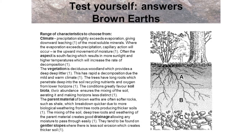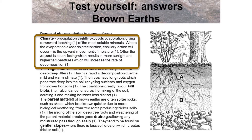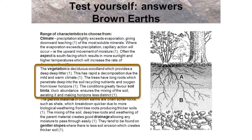Here is a draft answer with a range of characteristics to describe brown earth soils and their formation. Firstly, climate: where precipitation slightly exceeds evaporation, giving downward leaching of the most soluble minerals. Where evaporation exceeds precipitation, capillary action — the upward movement of moisture — will occur. Often the aspect is south-facing, resulting in more sunlight and higher temperatures which increase the rate of decomposition. The vegetation is deciduous woodland which provides a deep litter, with rapid decomposition due to the mild and warm climate.